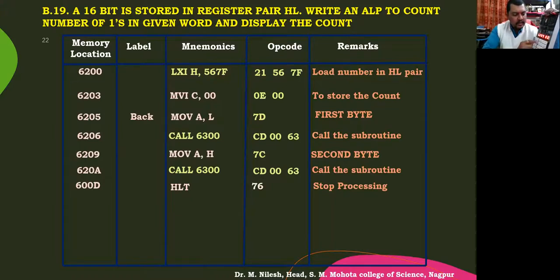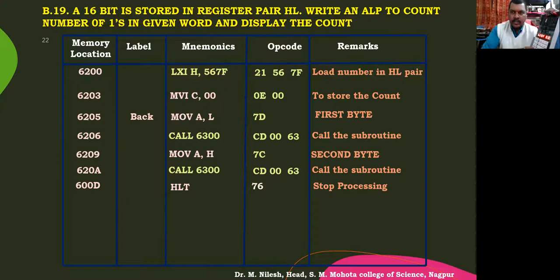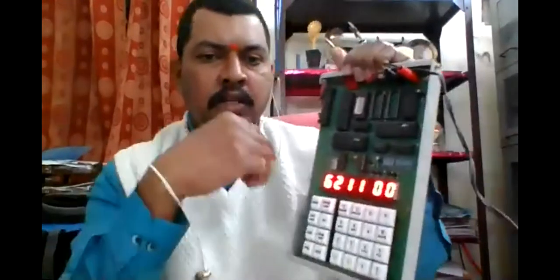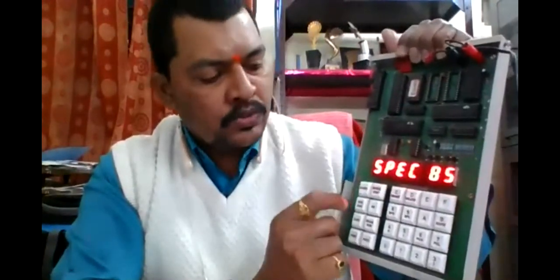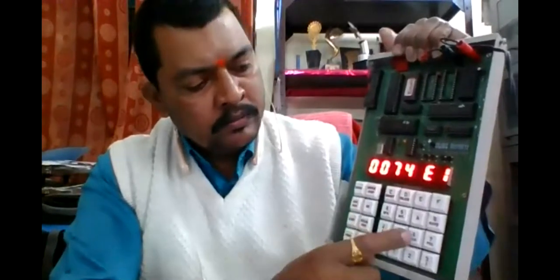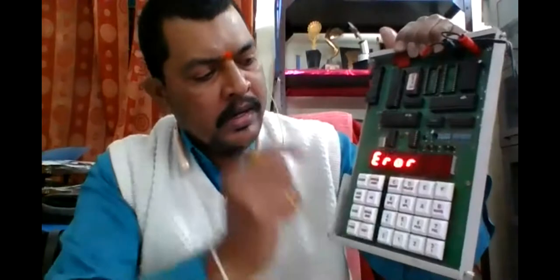Then the next data — move A to H, that is 7C. And then we are again calling the subroutine: 0063. Lastly we have to halt. So our result is supposed to be in register C. This was the program that we have written. Now let us execute — reset, go to memory location 6200 and execute.